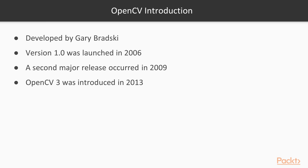OpenCV3 was introduced in 2013. Its structure has been revised to remove unnecessary dependencies, large modules have been split into smaller ones, and the API has been refined.